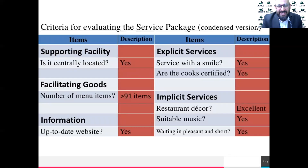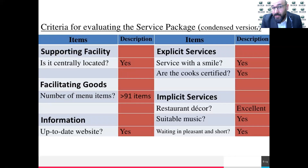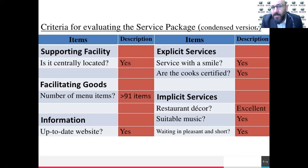Hello everyone. This is Dr. Mahmoud Allodeh, and again in another video for service process design and improvement. We will be continuing on some of the quality tools to ensure the quality of a service. We did talk about the service package quality, and we looked into five criteria: supporting facility, facilitating goods, information, explicit services, and implicit services.